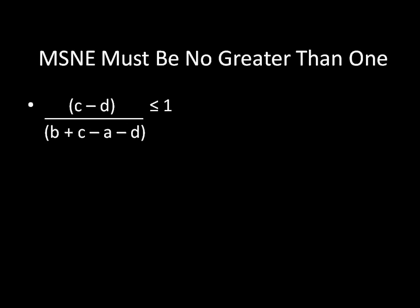Now, assuming B plus C is greater than A plus D, we need to make sure that our mixed strategy is no greater than 1. So we set it less than or equal to 1. And we begin by multiplying both sides by the denominator. Notice that because we are assuming B plus C is greater than A plus D, the denominator will be positive, and therefore we do not have to flip the inequality as we would if the denominator were negative.